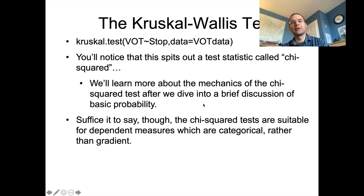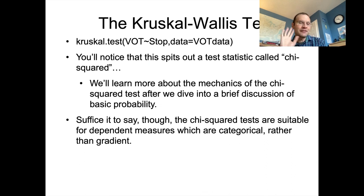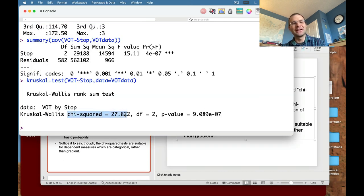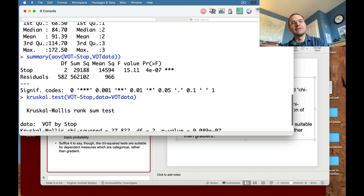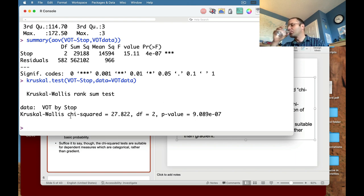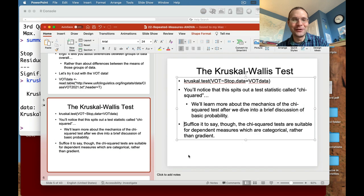We need to learn more about how basic probability works to understand the underlying mechanics of the chi-squared test, which turns out to not be super complicated but takes a while to understand all the details. For now, chi-squared tests are suitable for dependent measures which are categorical rather than gradient. What the Kruskal-Wallis test is probably doing underlyingly is converting these raw measures of VOT into something categorically based for each stop — that's where you get the chi-squared analysis from.